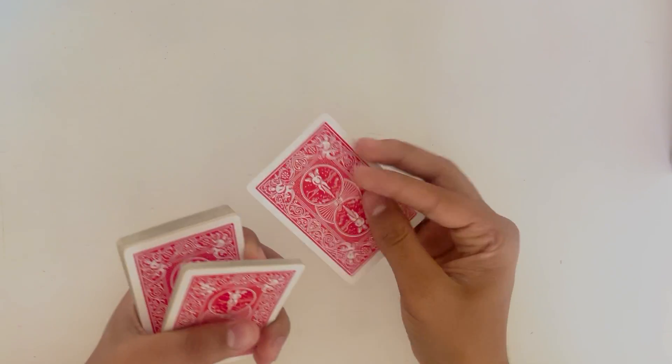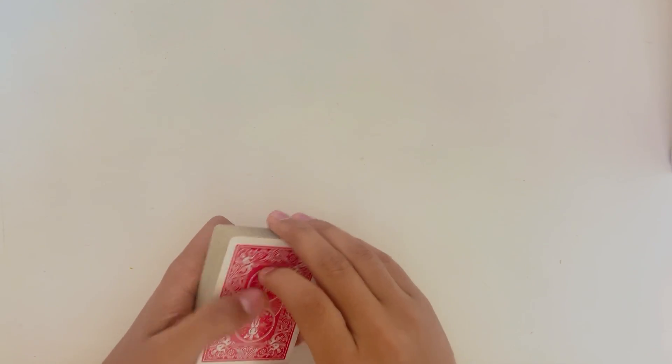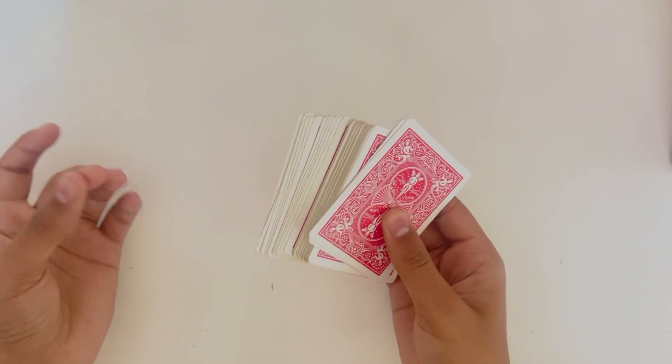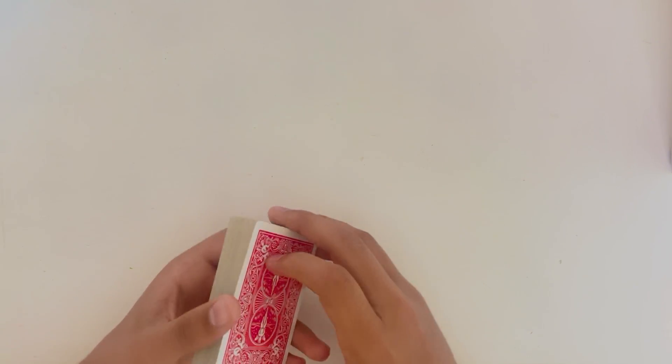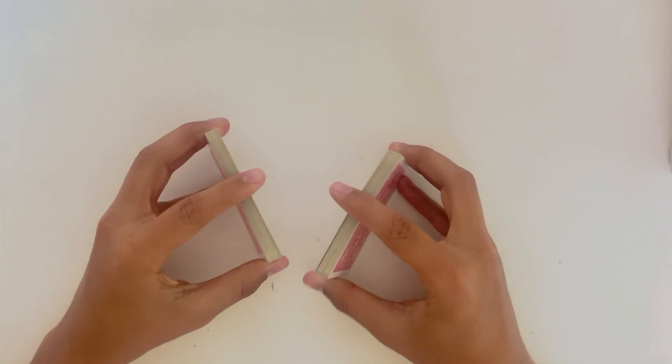The trick is that I just fling the deck from one hand to the other and then there's going to be two cards remaining in my left hand and those are going to be the two cards that we just lost into the deck. And to make it even better, I can shuffle the deck.